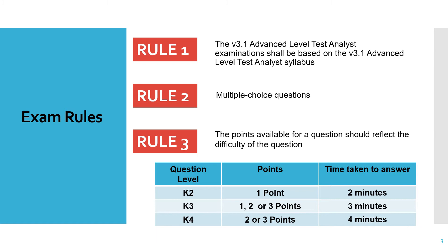From the multiple choices you need to select the most appropriate answer. Now let's say there is a question — below the question it's mentioned that you need to choose one correct answer or two correct answers, so that would be specified below the question itself. You need to read the question very carefully, because if it says you need to choose two correct answers and you only select one answer, even if that is correct, it would be considered as wrong and you would not get any marks for that question.